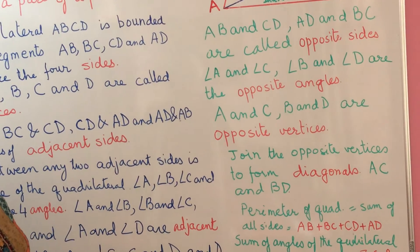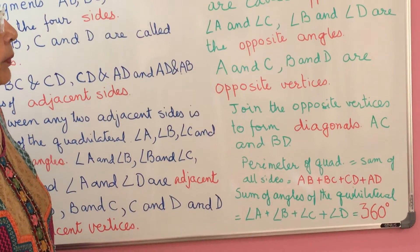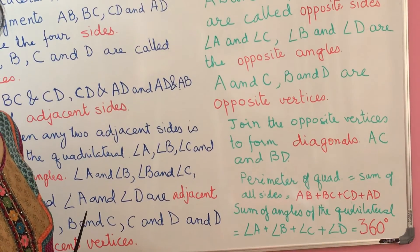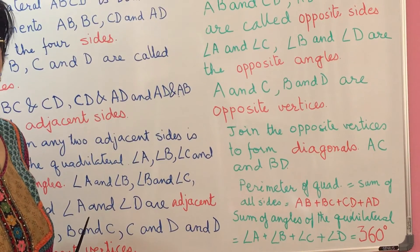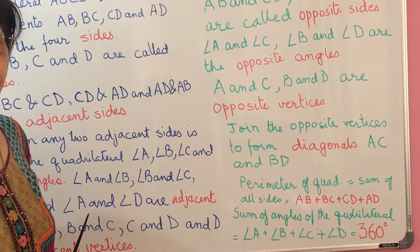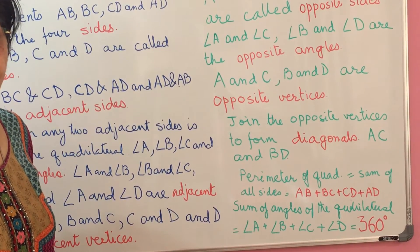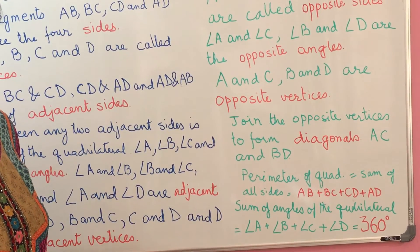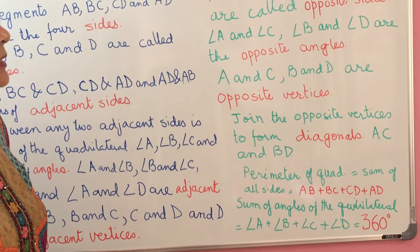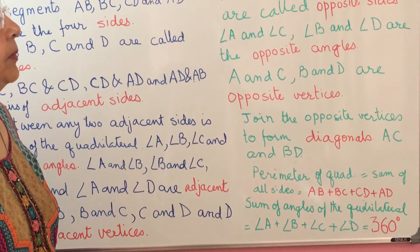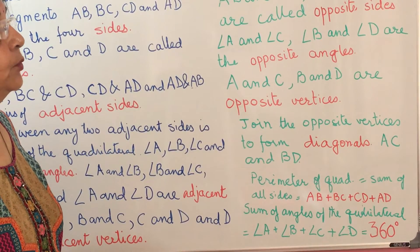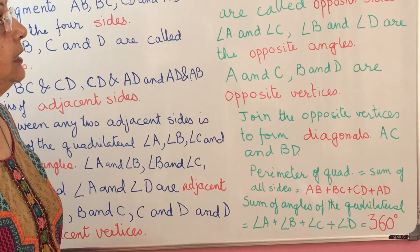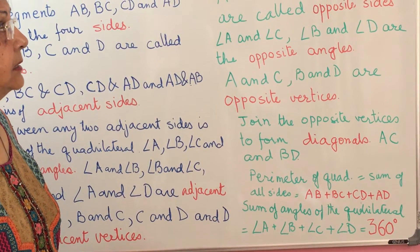Next, the perimeter of a quadrilateral is the sum of the lengths of all its sides. So the perimeter of the quadrilateral is equal to AB plus BC plus CD plus AD.